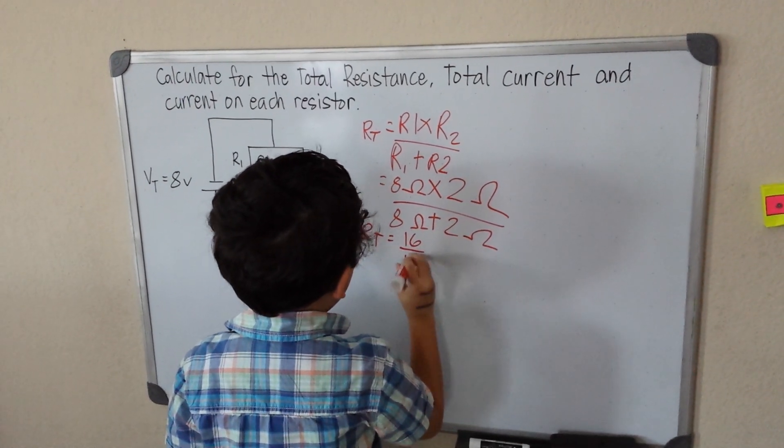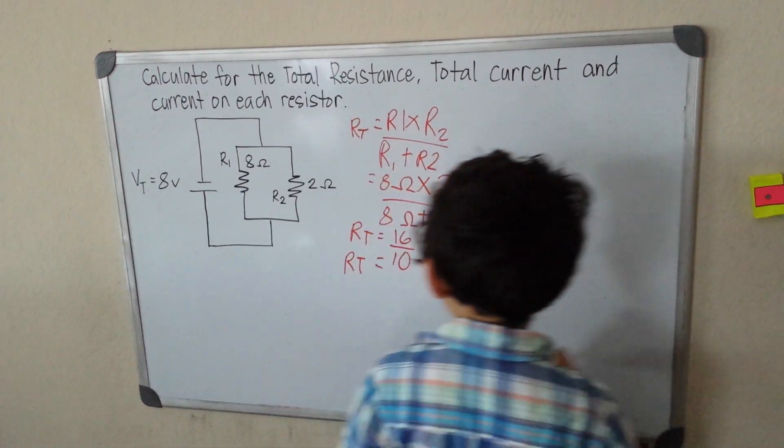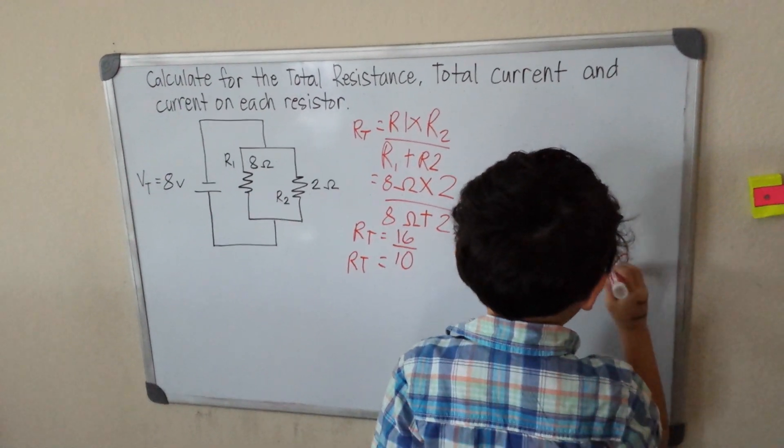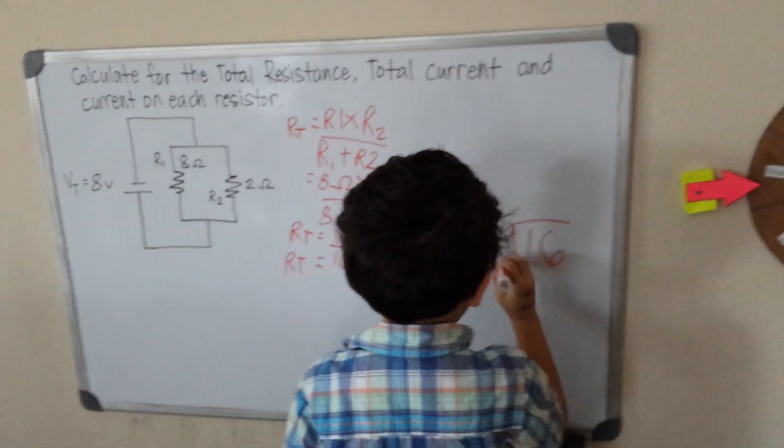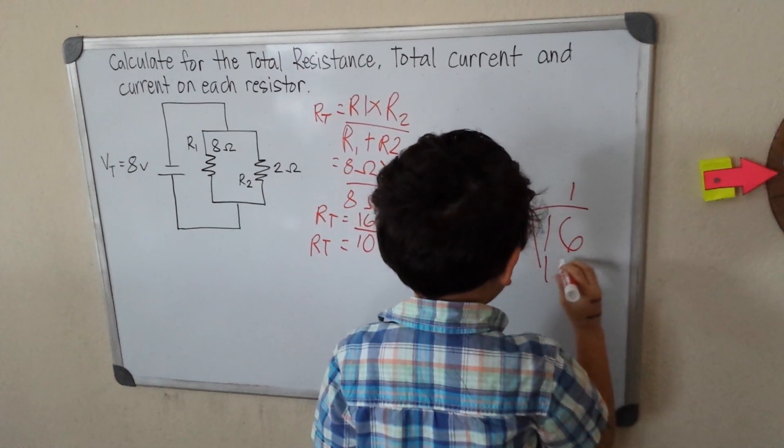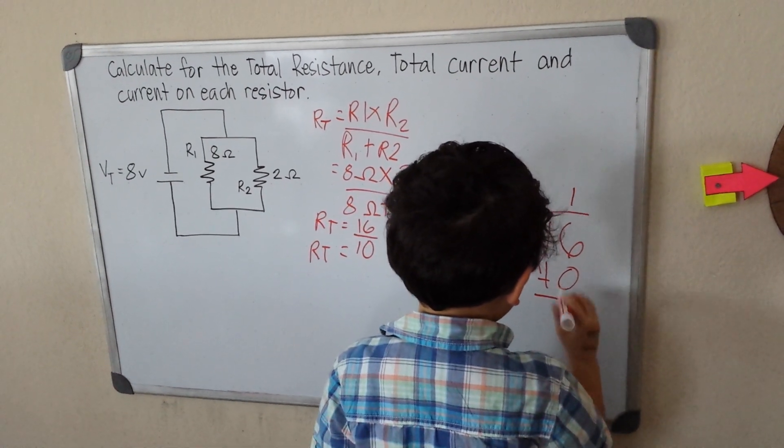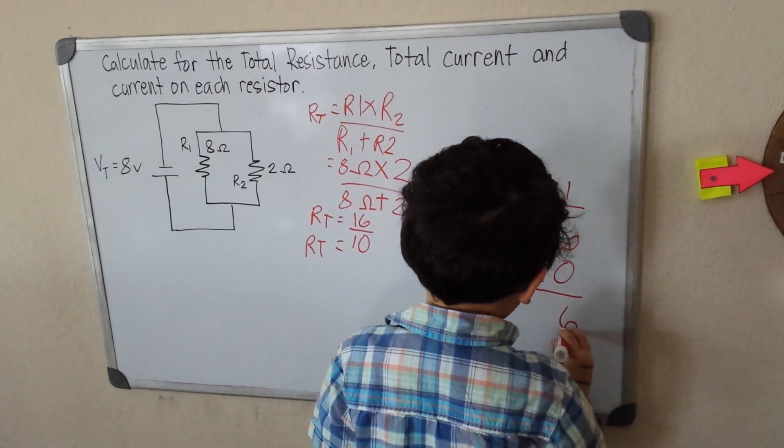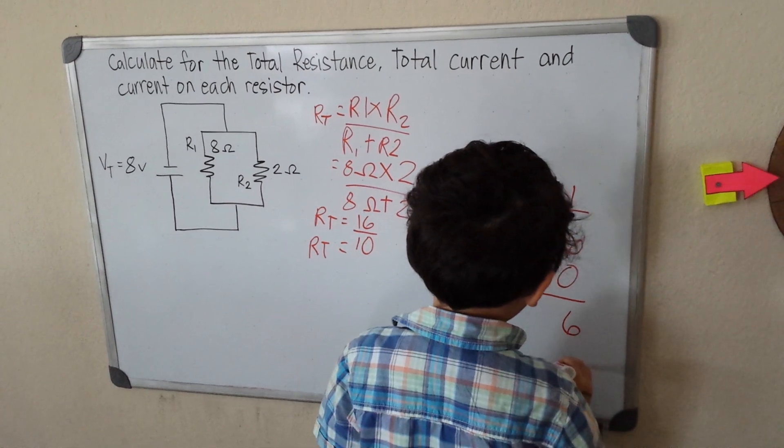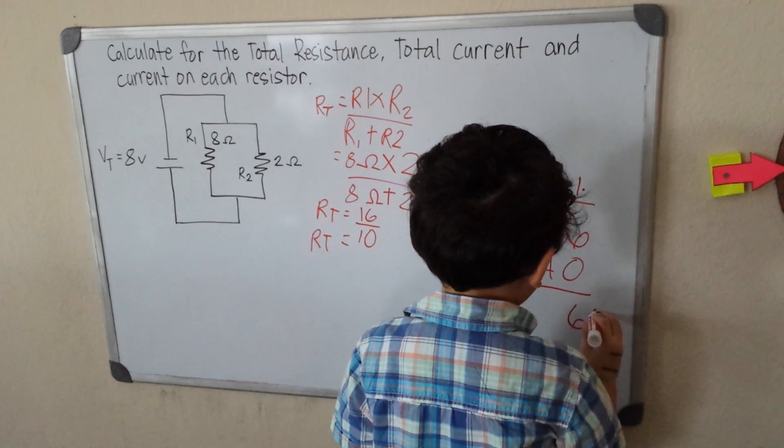16 over 10. Now what's our total resistance? 16 divided by 10. That makes 1.6, so put a point and put a zero.